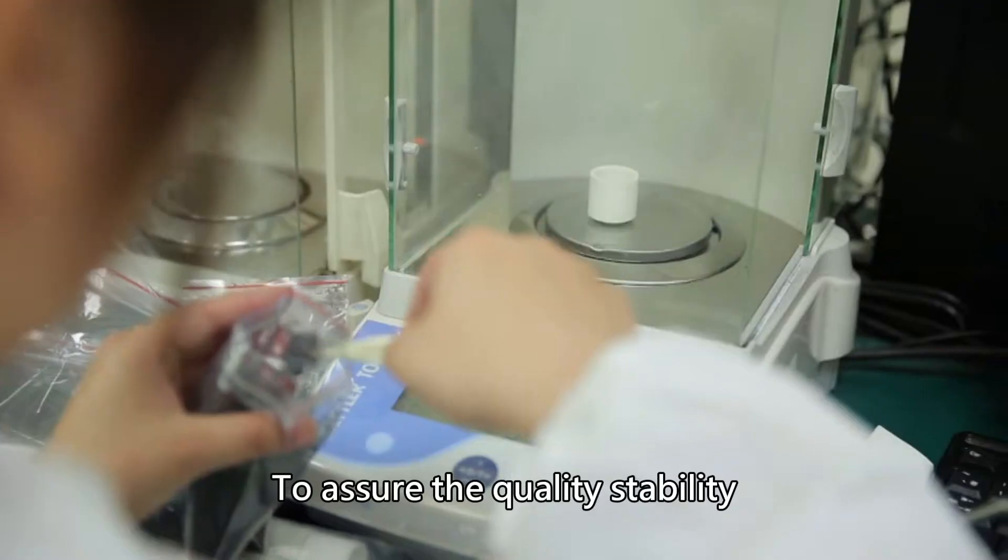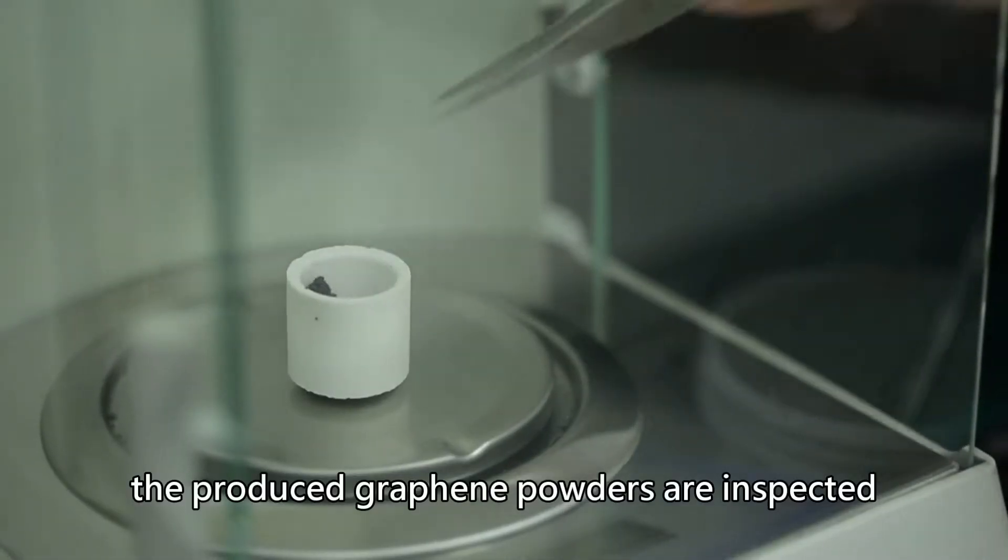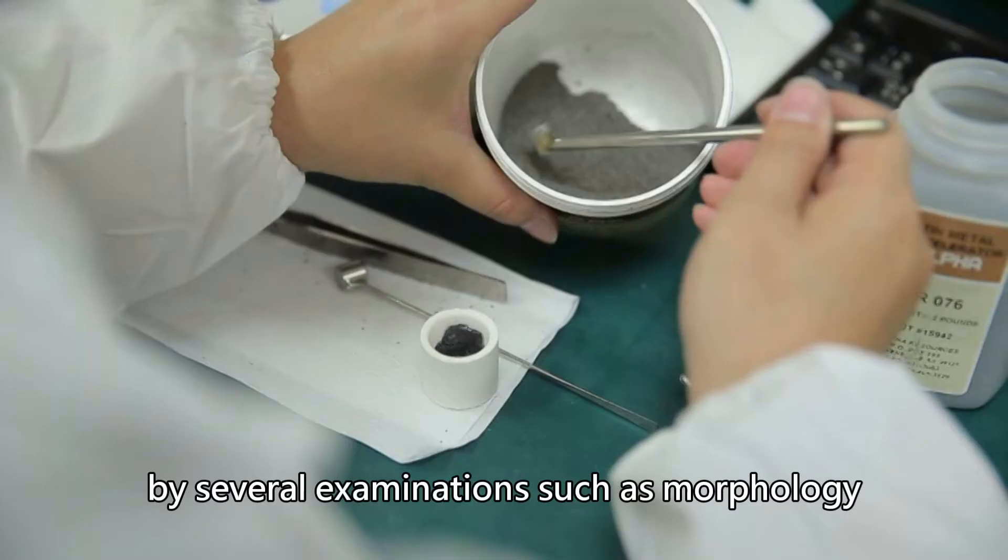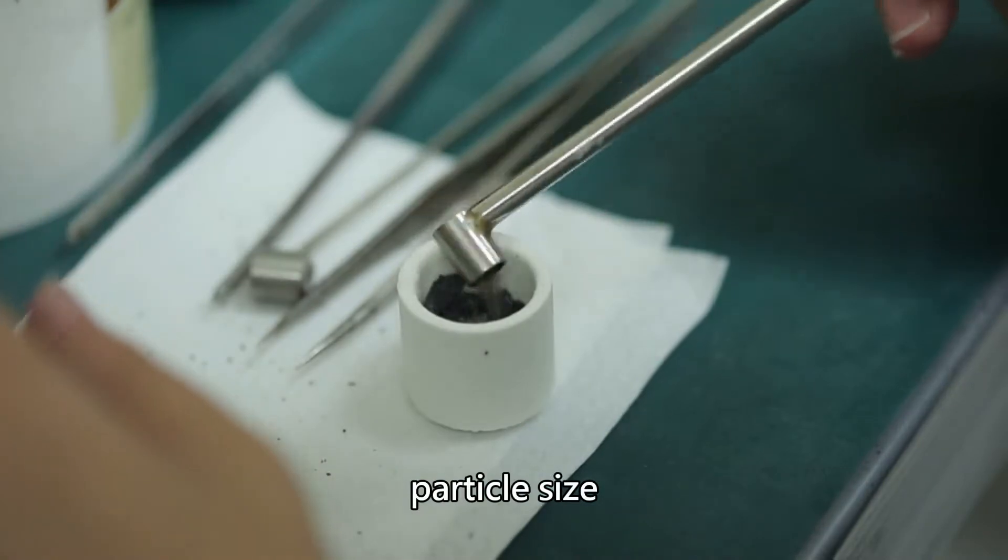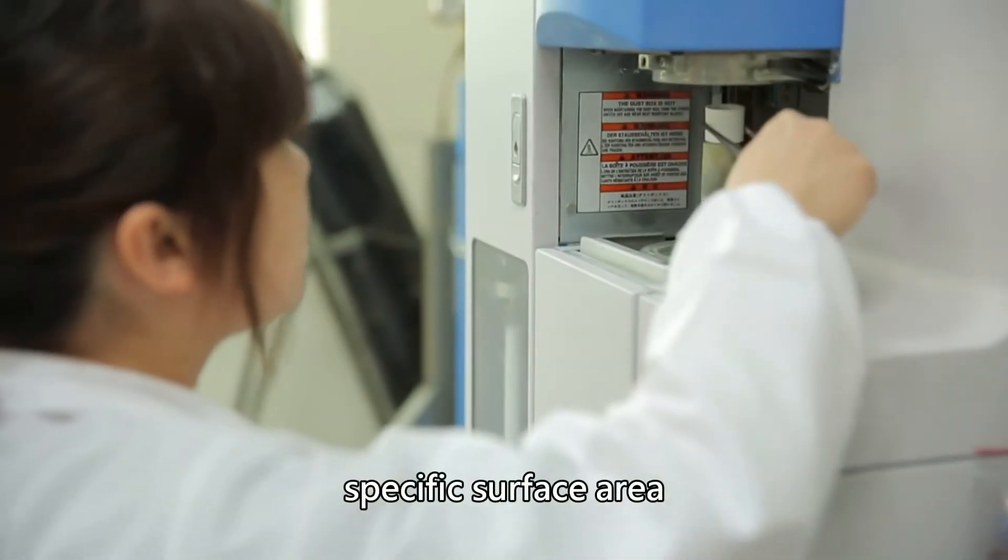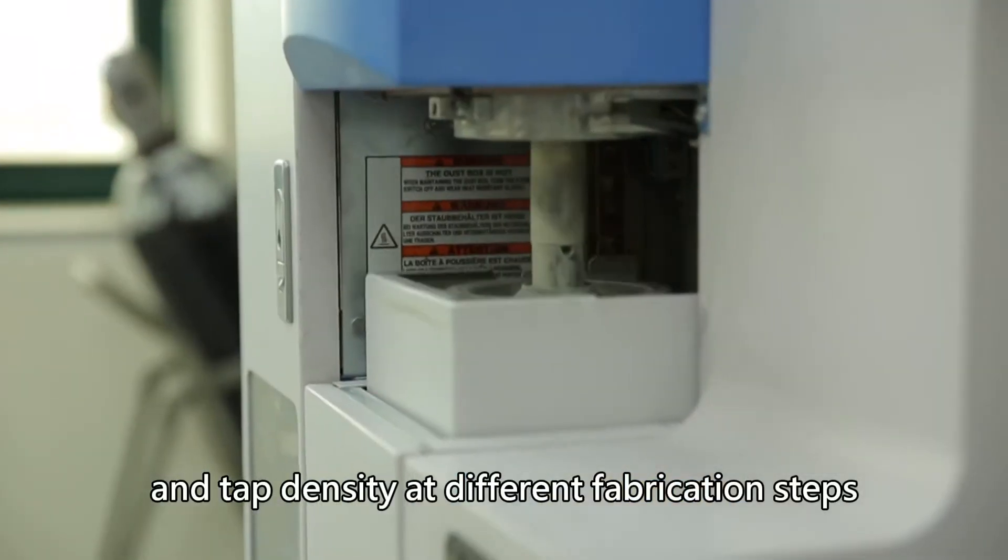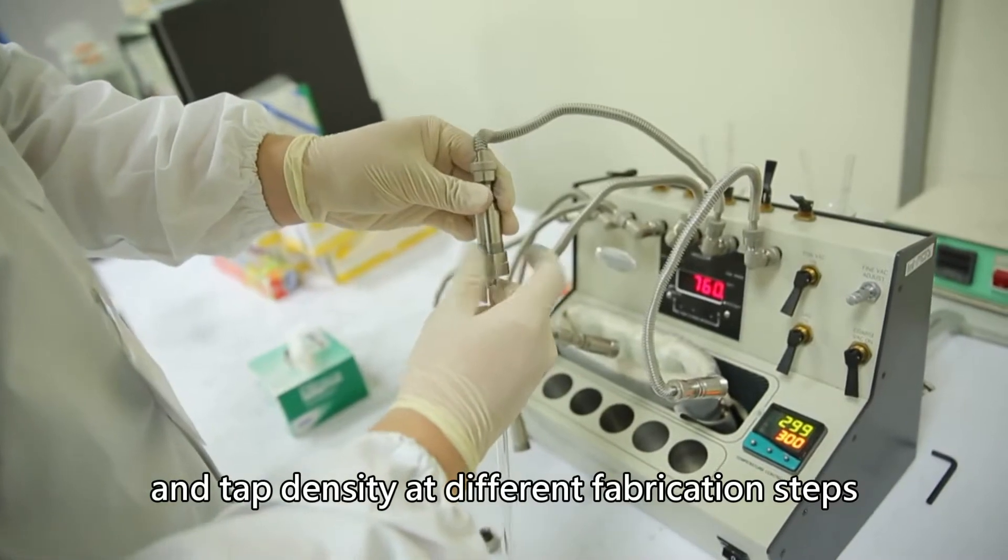To assure the quality stability, the produced graphene powders are inspected by several examinations, such as morphology, particle size, specific surface area, and tap density at different fabrication steps.